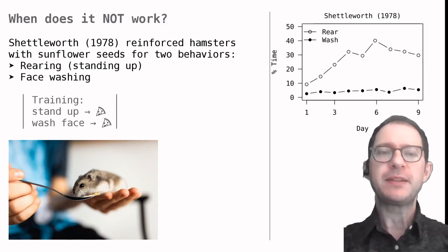The results of the experiment are in this graph. As we can see, rearing increased a lot when it was reinforced with sunflower seed, while washing does not increase at all. So washing cannot be reinforced with sunflower seed. It turns out it's hard to reinforce washing at all, although you can reduce it somewhat by punishing it.